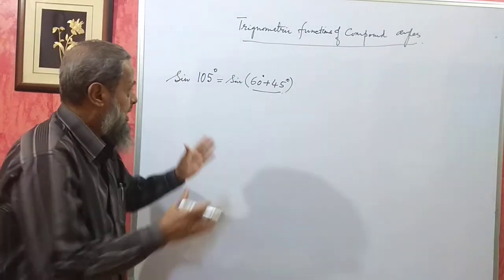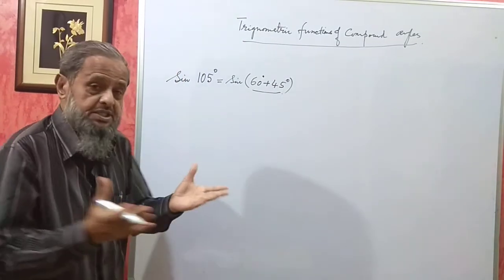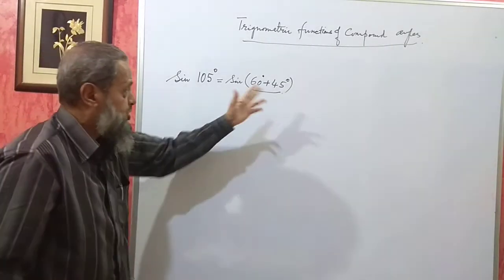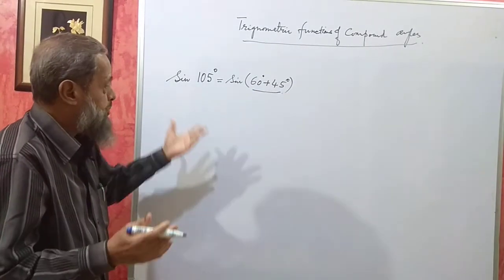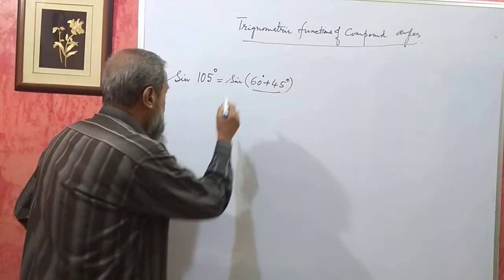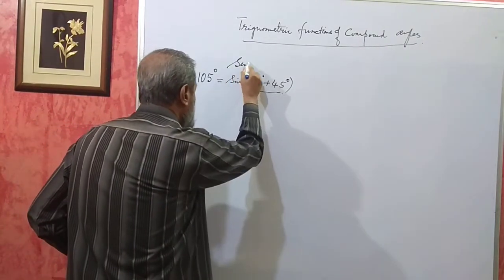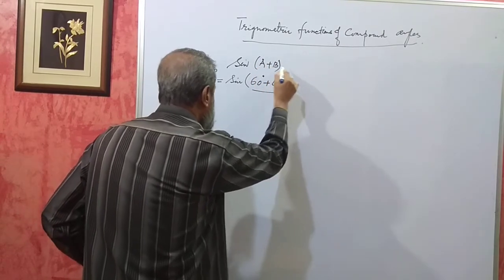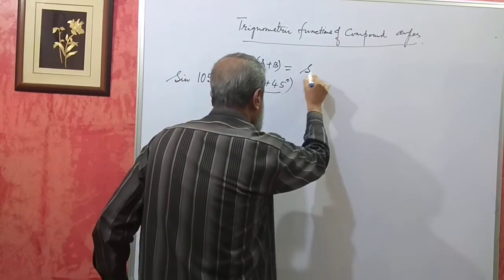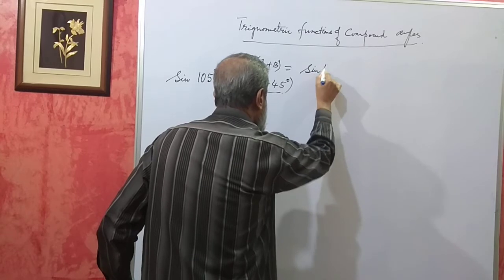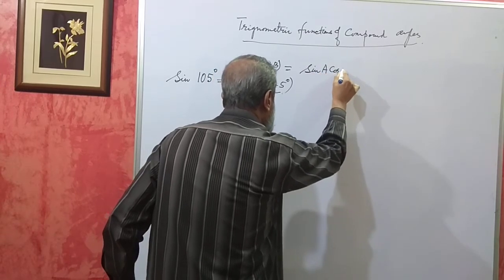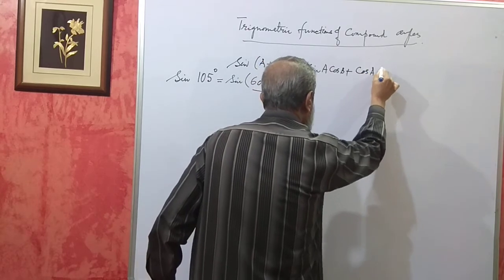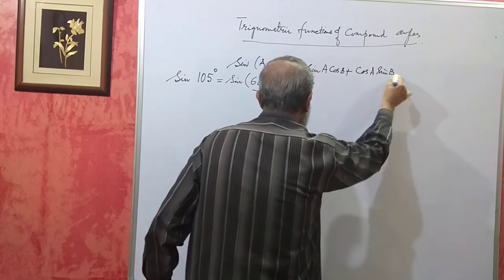A compound angle is the sum of two angles or the difference between two angles. For this, there is a formula. The formula is sine of A plus B. We have to use this formula. So, sine of A plus B is equal to sine A cos B plus cos A sine B. Using this formula, I have to do this.